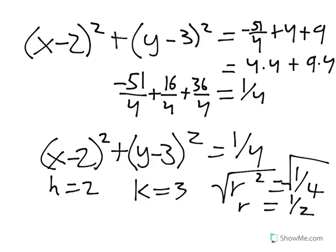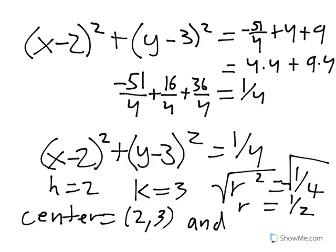From here you can see that the center of the circle is at 2 comma 3, and the radius is 1 half.